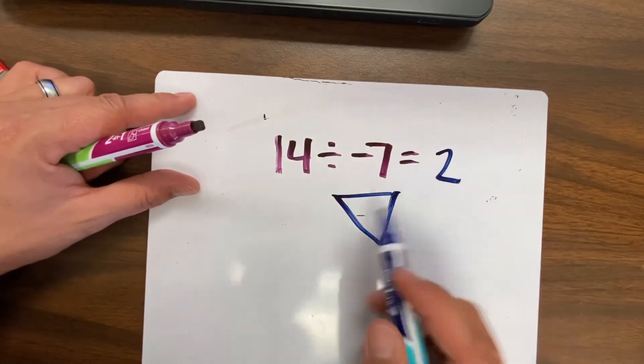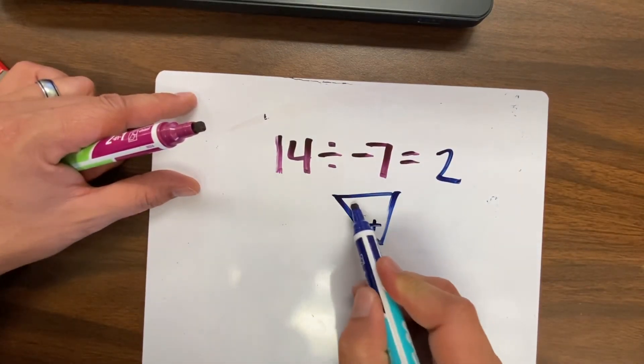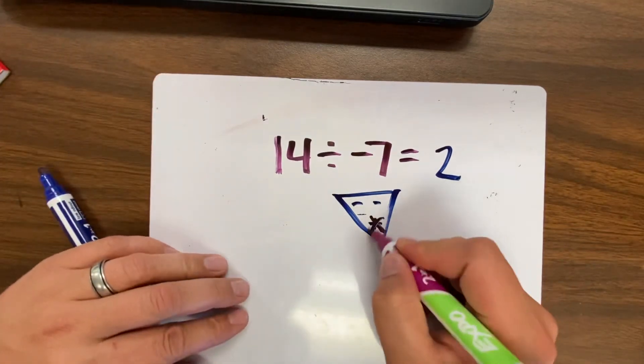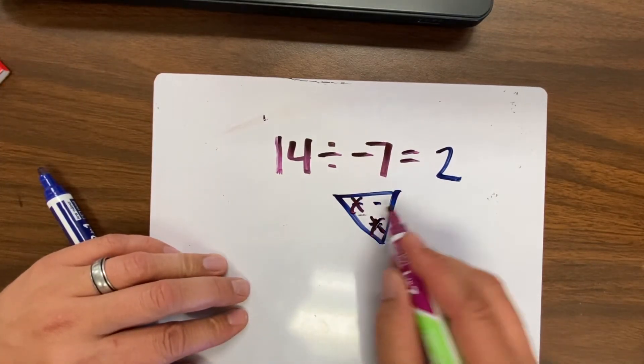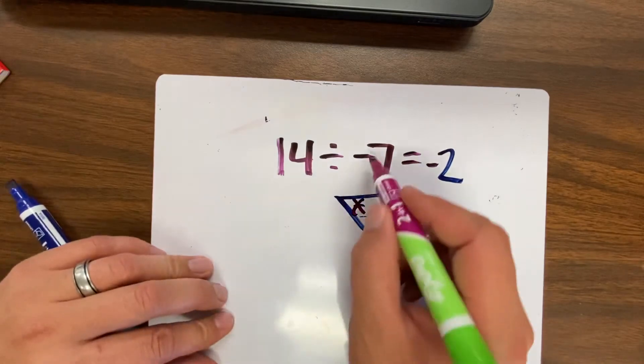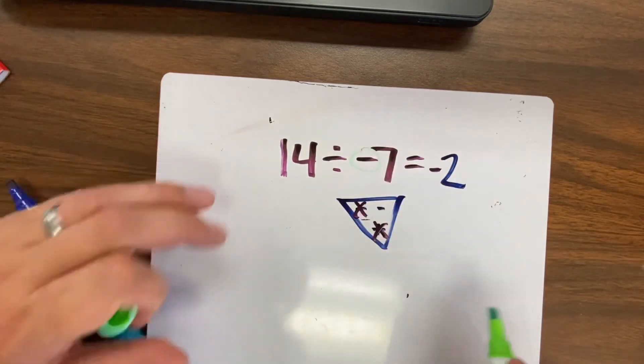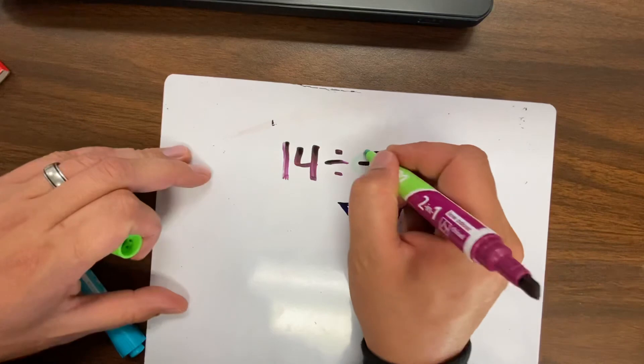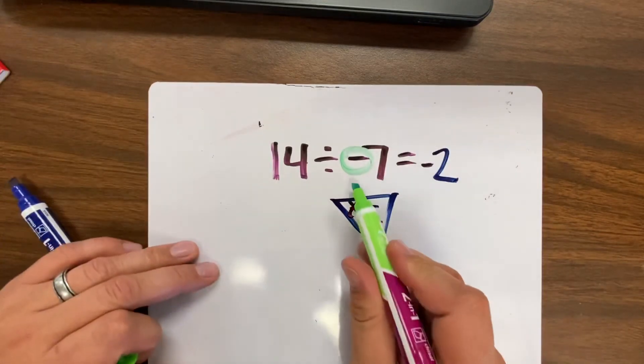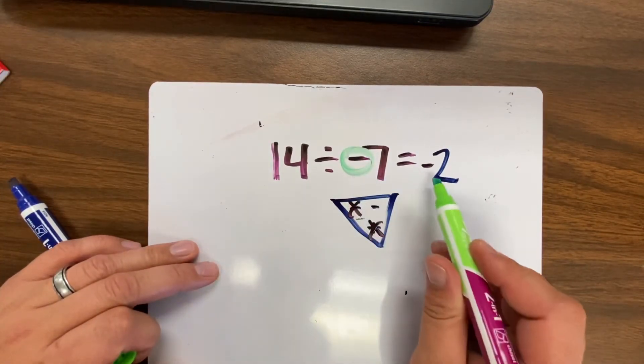And then if we use our triangle, that one's positive. That one's negative. So it's going to be a negative answer. We had one negative on here. It's hard to see. One negative on here means we're going to have a negative answer.